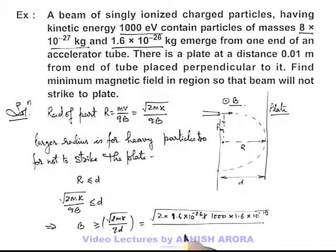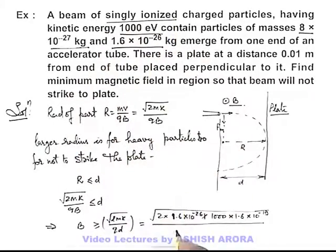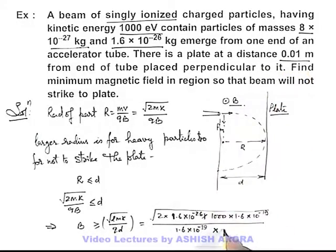Divided by the charge of particle. As it is singly ionized particle it is 1.6 into 10 to power minus 19 multiplied by the separation 0.01. On simplifying this calculation you'll get the result as root 2 tesla that'll be the answer to this problem.